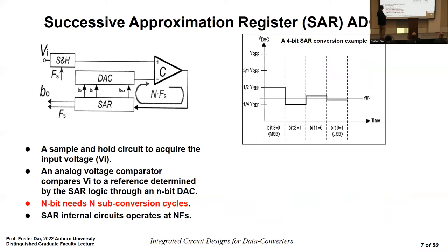For a SAR ADC circuit, we first sample the input voltage and hold it on a capacitor using a sample-and-hold circuit. Then we compare the input voltage with different references generated by a DAC, controlled by the SAR logic. The circuit must run fast because the internal speed must be N times the sample frequency. With technology scaling and faster transistors, SAR ADCs can now achieve decent sample rates.